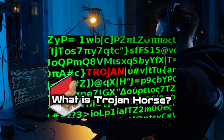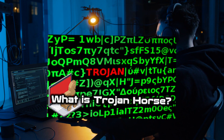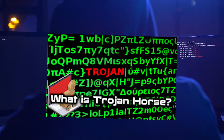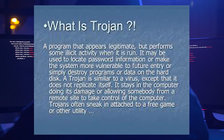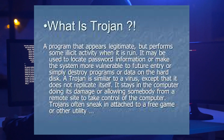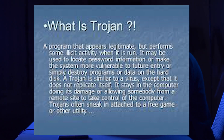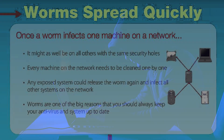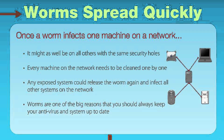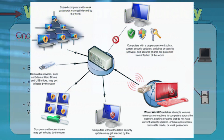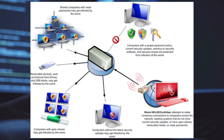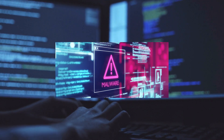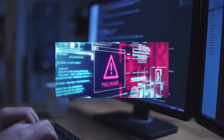Trojans: a Trojan is a program hiding inside of a useful program with malicious intent. Unlike viruses, a Trojan does not replicate itself; it's used to establish a backdoor to be exploited by hackers. Worms are unlike viruses in the fact that they do not attack the host. They're self-contained programs that propagate across networks and computers. Worms are often installed through email attachments and send a copy of themselves to every contact in the infected computer's email list.